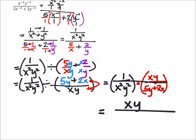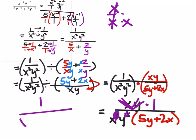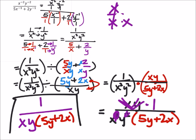We can look at x over x squared — since x squared is just x times x, the x cancels out one of those two, making that a one. Similarly, y cancels out one of the two y's. So in the numerator, both x and y cancel out, leaving just one. In the denominator we have one x, one y, and in parentheses five y plus two x. That's about as far as we can simplify this.